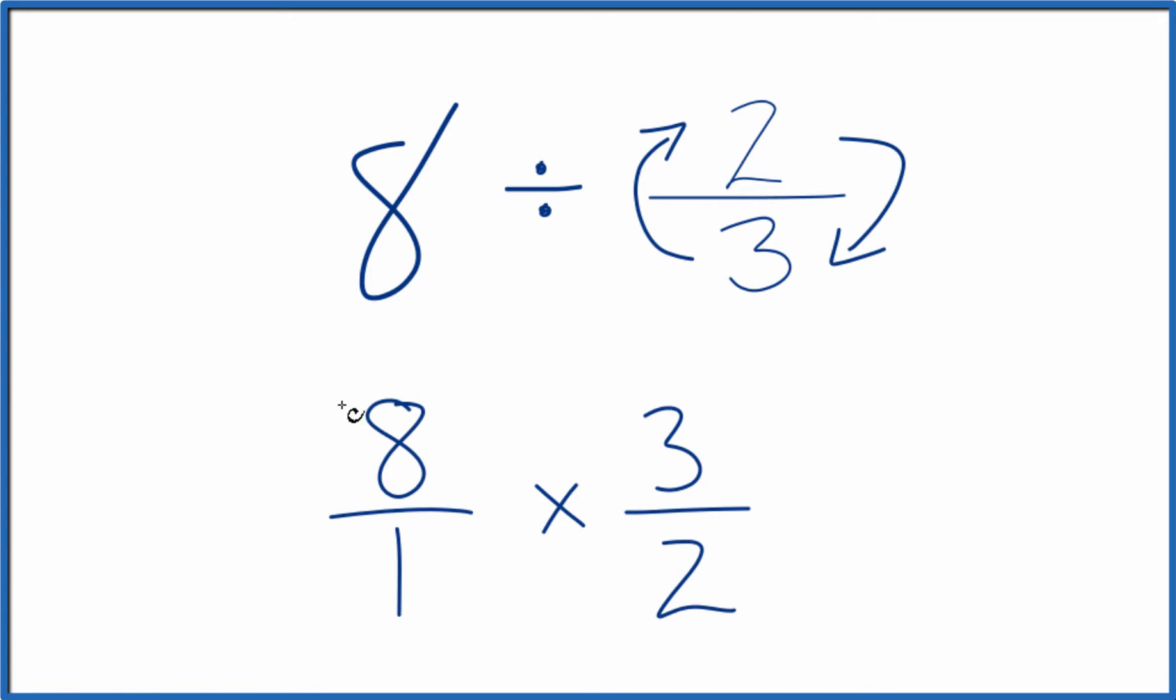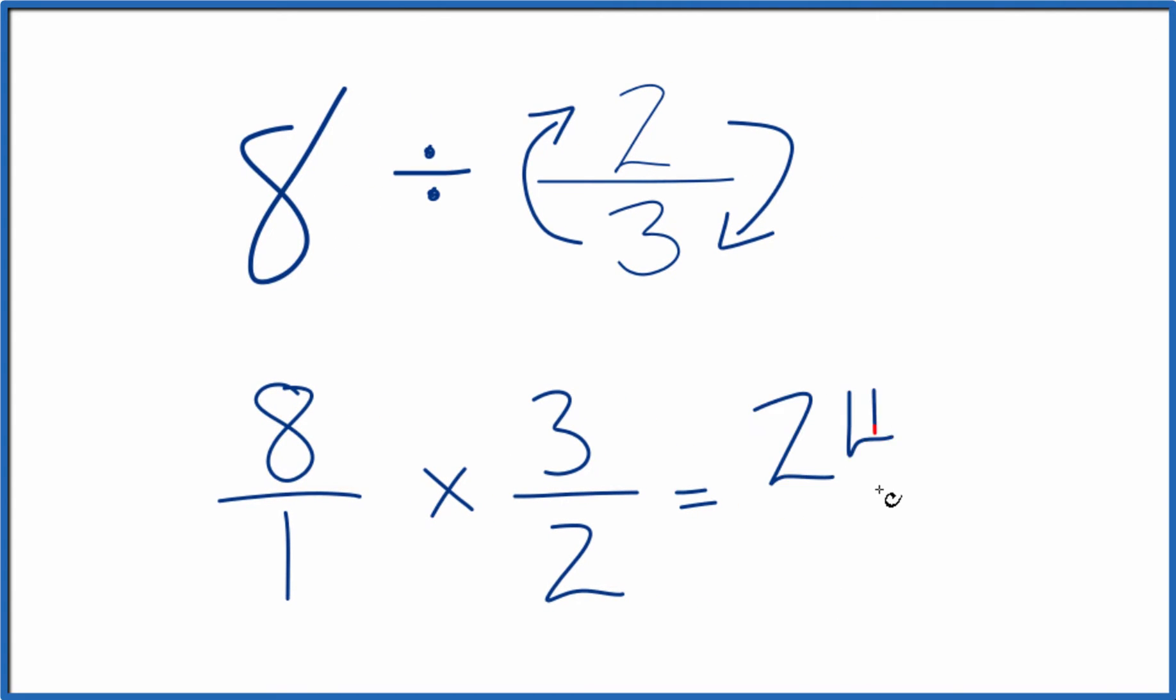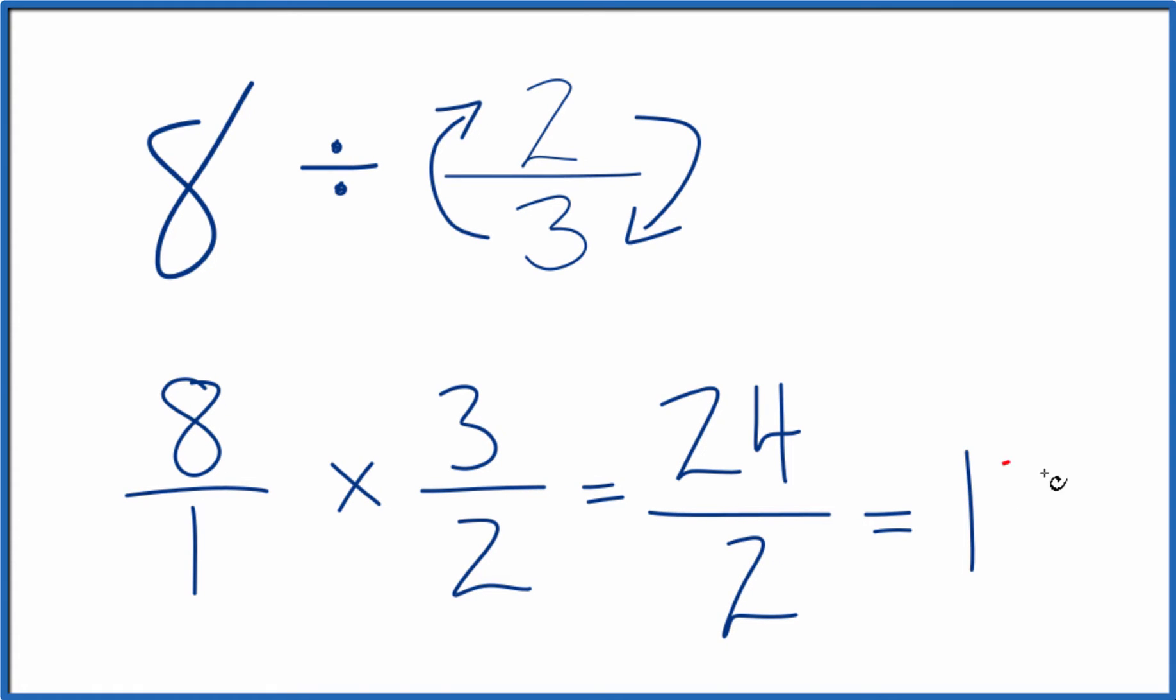When we're multiplying fractions here, we're going to multiply the numerators and then the denominators. So 8 times 3, that equals 24. 1 times 2, that equals 2. And 24 divided by 2, that equals 12.